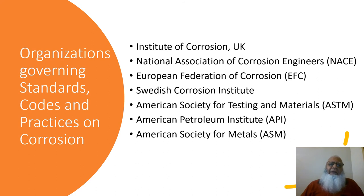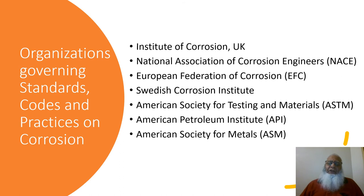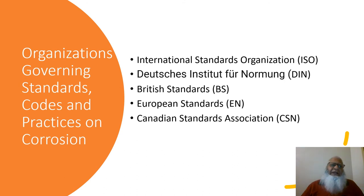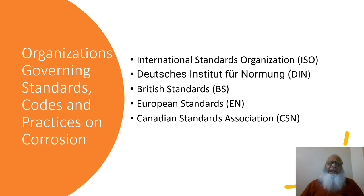This slide shows organizations governing standards, codes, and practices on corrosion, including the Institution of Corrosion UK, the National Association of Corrosion Engineers Texas USA, the European Federation of Corrosion, the American Society for Testing and Materials (ASTM), the American Petroleum Institute (API), and the American Society for Metals (ASM). A further expansion slide shows the International Standard Organization, the German DIN standards, European standards, and Canadian standards. Many countries have their own national standards.